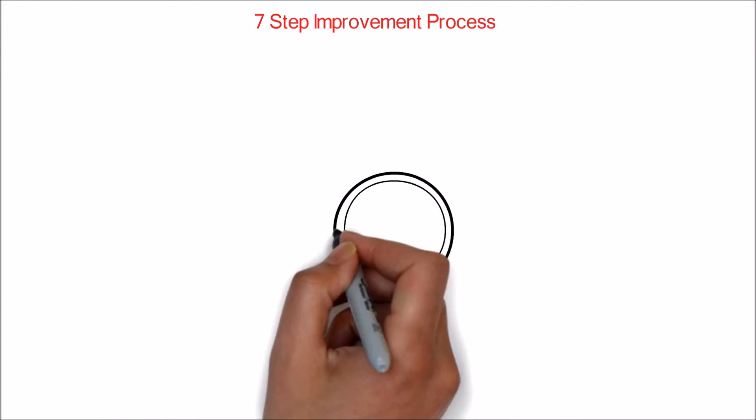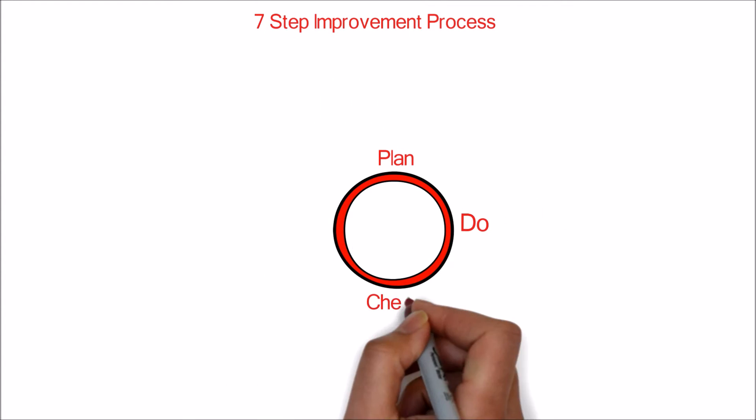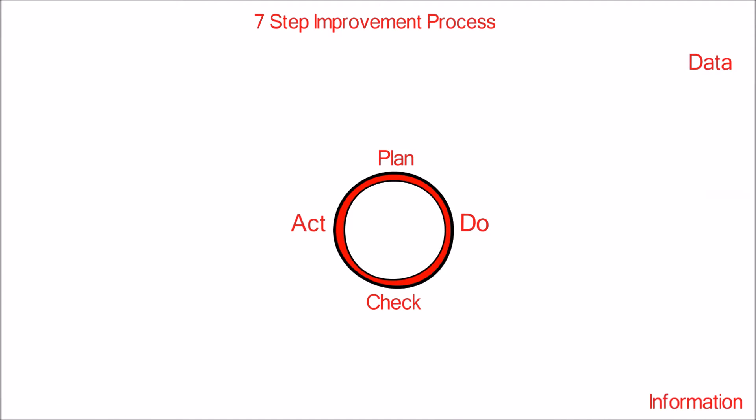We will look into the seven steps improvement process. The seven step process is the vital process of CSI. It enables an organization to identify and understand which processes and functions of their service operations need major enhancement. The purpose of the seven step improvement process is to define and manage the steps needed to identify, define, gather, process, analyze, present, and implement improvements.